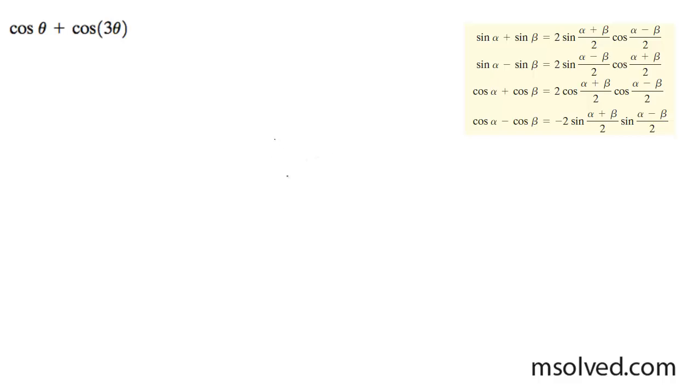This matches best up with the third term here, which is right here. I'm going to rewrite this as 2 cosine theta plus 3 theta over 2 times cosine theta minus 3 theta over 2.